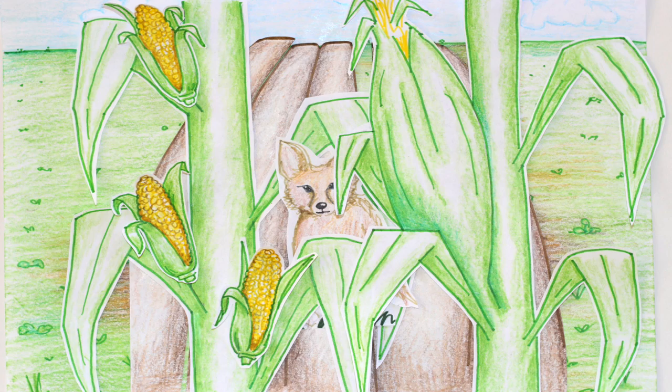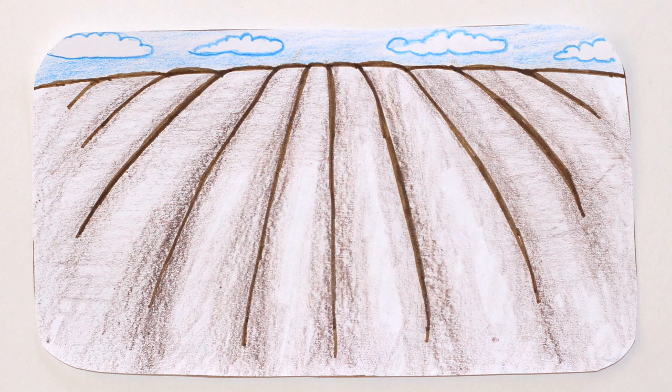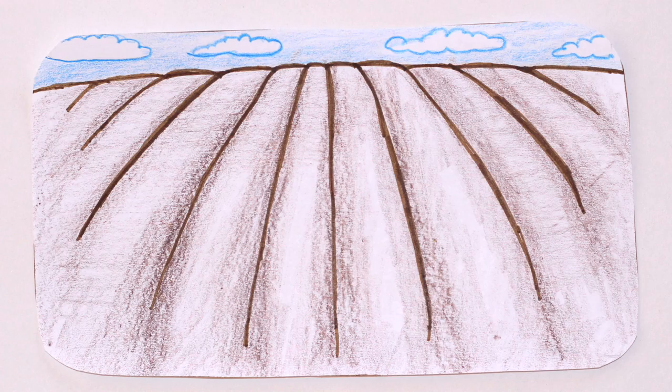There may still be some wiggle room through innovative practices and tools that keep yields high but also manage to open up some space for wildlife. Practices like no-till farming, planting cover and forage crops, intercropping, and crop rotations all have the potential to foster some biodiversity here and there.